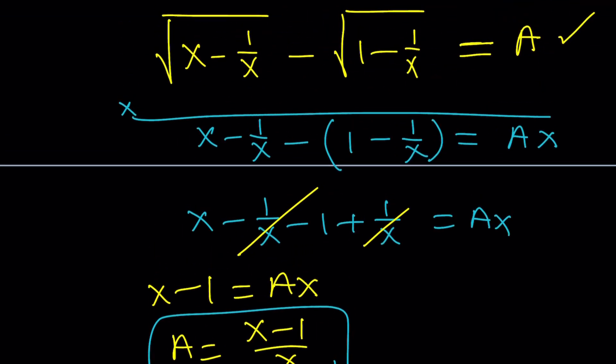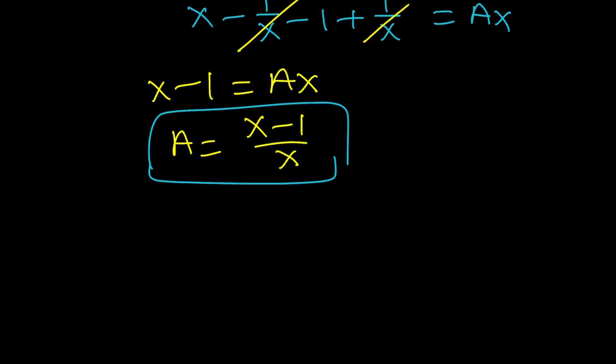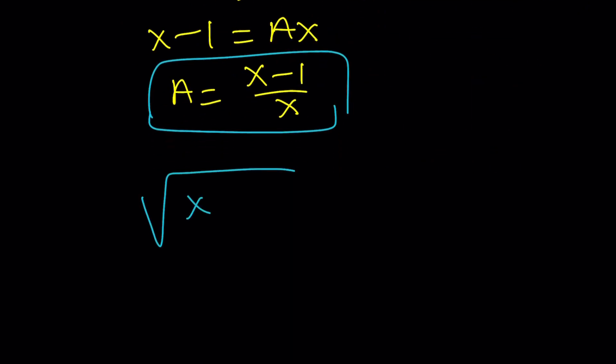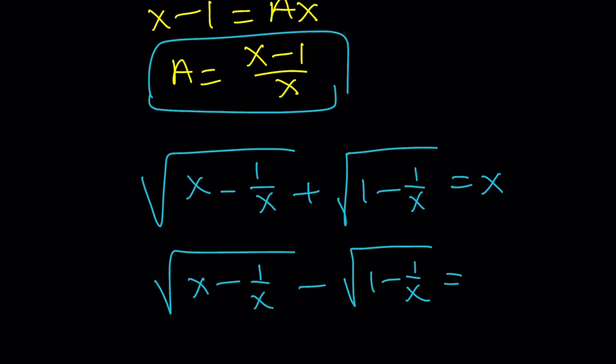Great. Now, let's go ahead and plug in that for a. So, that gives us the following. Let's rewrite the first equation. Square root of x minus 1 over x. By the way, this is the original problem, with a plus sign. This is equal to x. And its conjugate, we just found out, is equal to x minus 1 all over x.